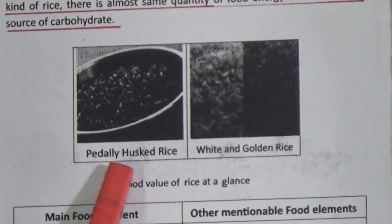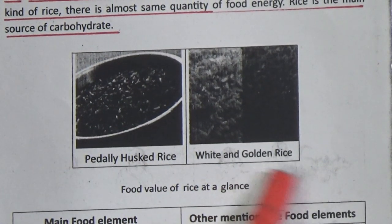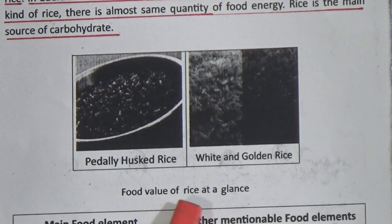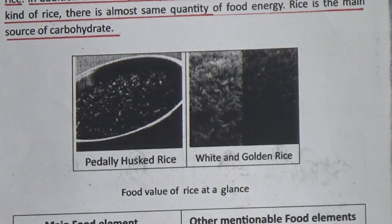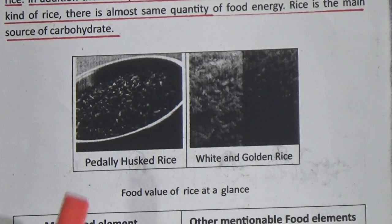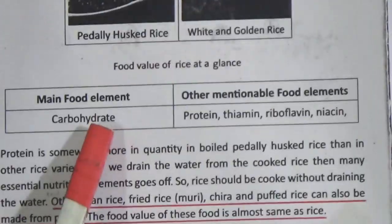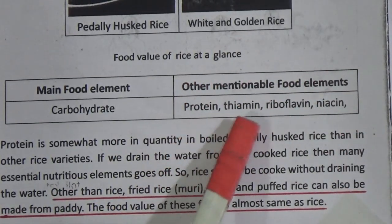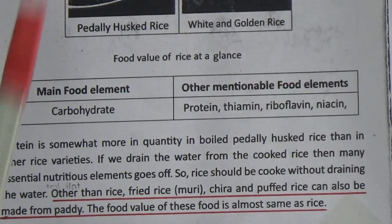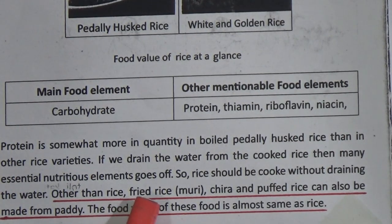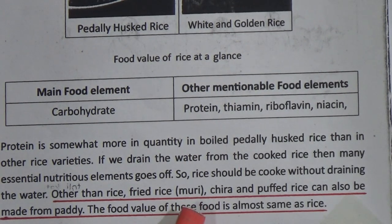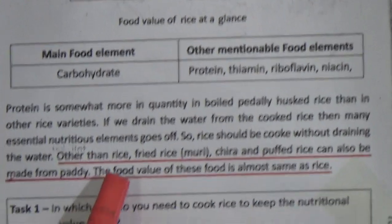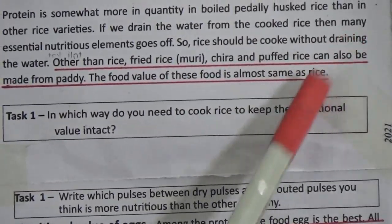They are given two pictures: parboiled husked rice and white and golden rice. Food value of rice at a glance — main food element: carbohydrate. Other mentionable food elements are protein, thiamine, riboflavin, and niacin. Other than rice, fried rice items such as muri, cheera, and puffed rice can also be made from parboiled rice. The food value of these foods is almost the same as rice.